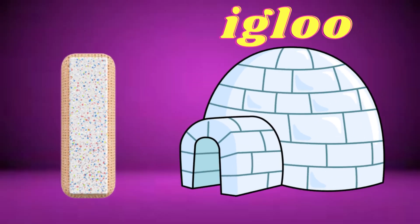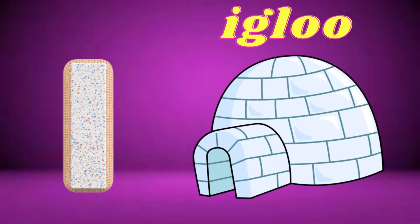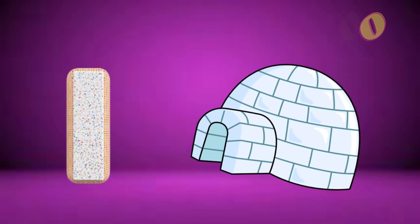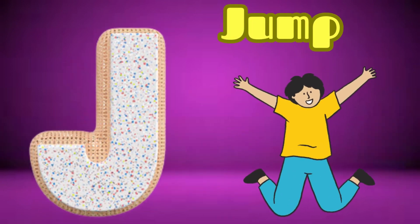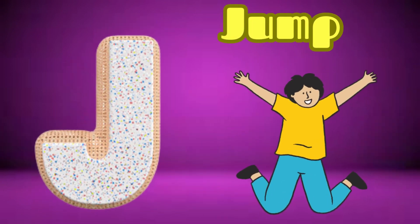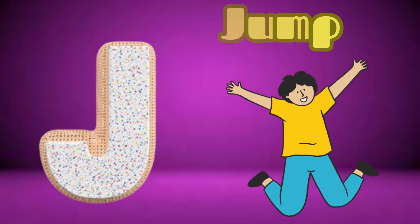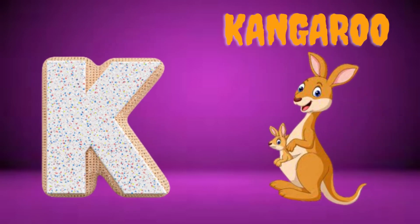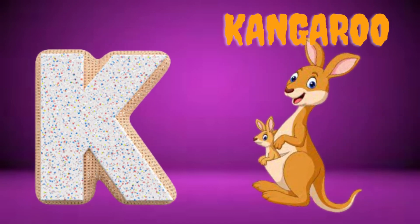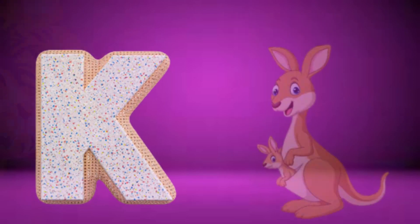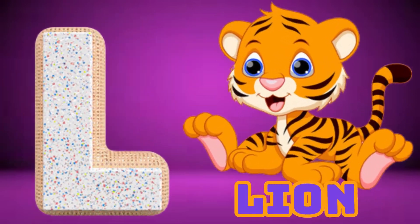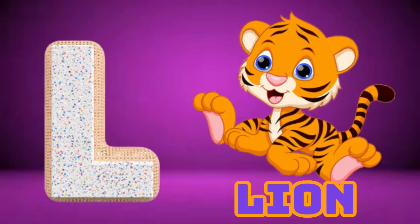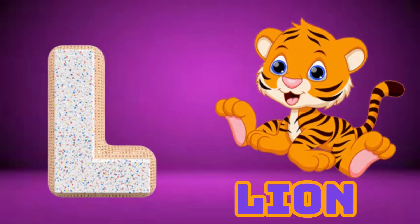I is for Igloo, I-I-Igloo. J is for Jump, J-J-Jump. K is for Kangaroo, K-K-Kangaroo. L is for Lion, L-L-Lion.